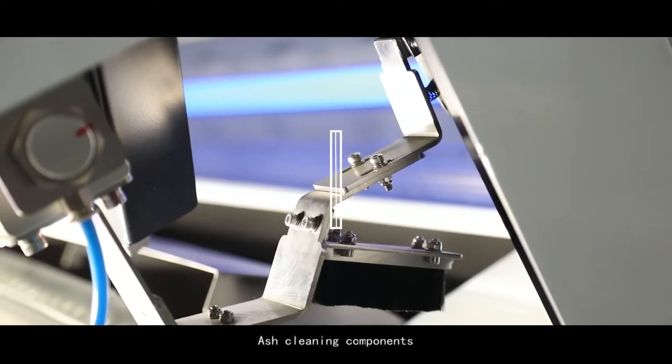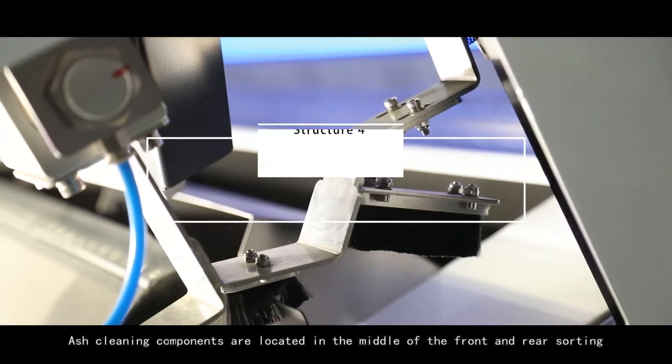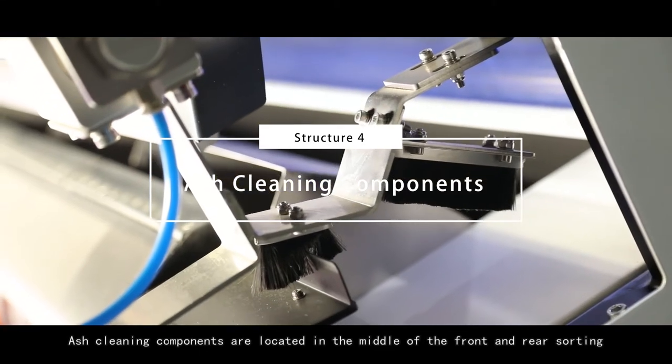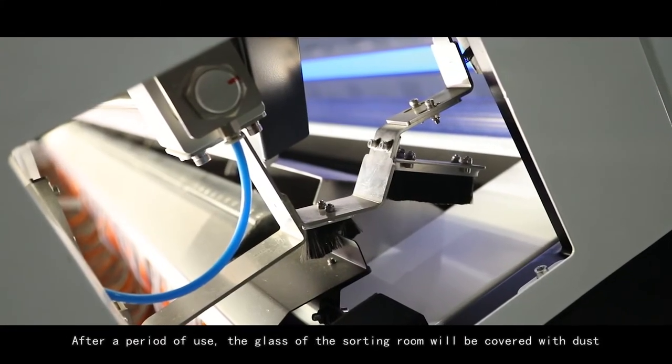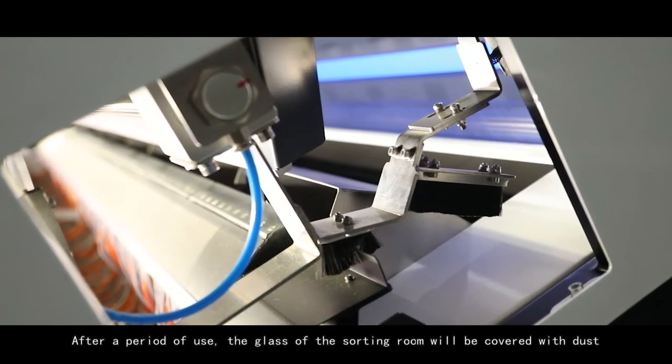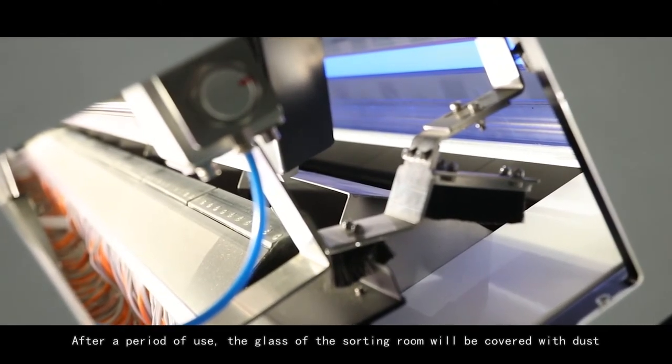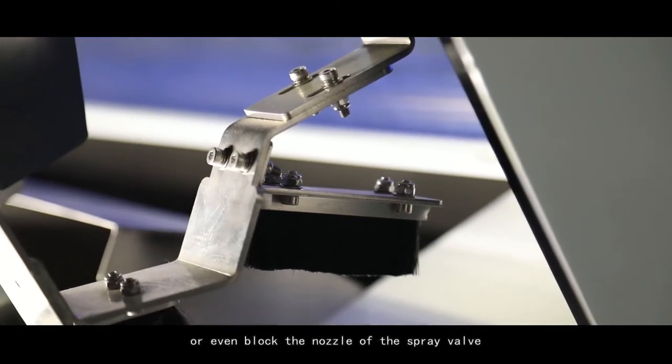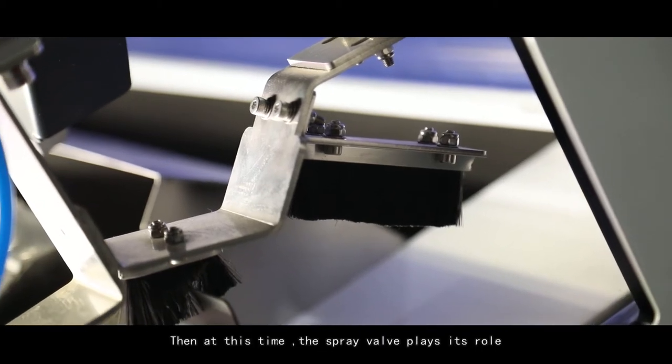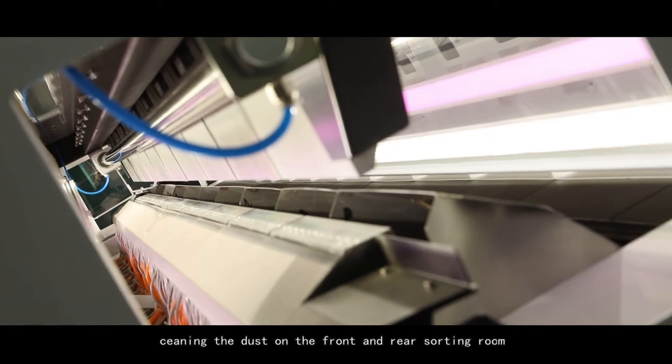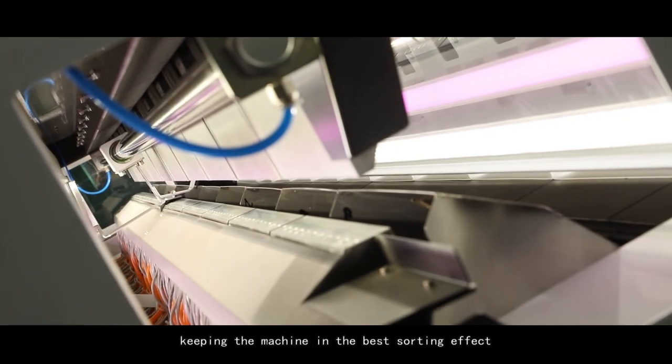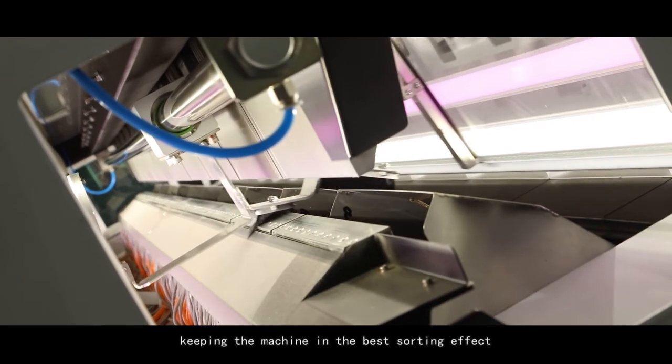Ash cleaning components. Ash cleaning components are located in the middle of the front and rear sorting room. A lot of materials are very dusty. After a period of use, the glass of the sorting room will be covered with dust or even block the nozzle of the spray valve. Then at this time, the spray valve plays its role, cleaning the dust on the front and rear sorting room and the nozzle, keeping the machine in the best sorting effect.